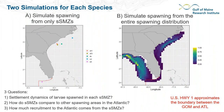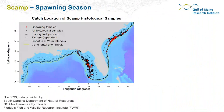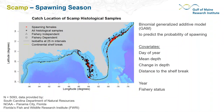For both simulations, larvae are spread throughout the spawning season according to species-specific spawning patterns. To estimate the scamp spawning season, we analyzed over 5,000 histological samples from throughout the Gulf of Mexico and U.S. South Atlantic. Red dots indicate spawning females. We used a binomial generalized additive model to predict the probability that a given sample comes from a spawning female, with covariates including day of year, average depth, change in depth, distance to the continental shelf break, year, and whether the sample came from a fishery-dependent or fishery-independent source.